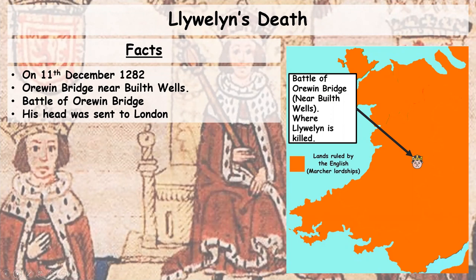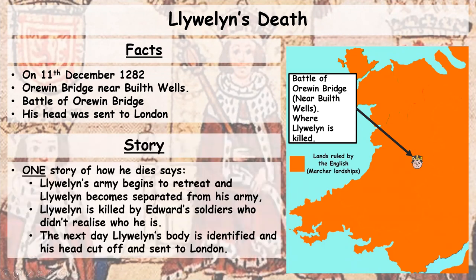His death took place at Orewin Bridge near Builth, Wales, during the Battle of Orewin Bridge, and his head was sent to London. There are many stories behind Llewellyn's death. One story says that Llewellyn's army begins to retreat during the battle and Llewellyn becomes separated from his army. He is then killed by Edward's soldiers who don't realize who he is. The next day, Llewellyn is identified, his head is cut off and sent to London.